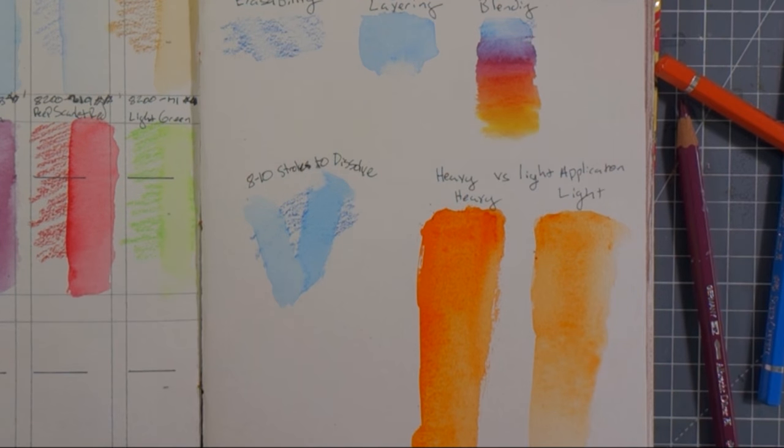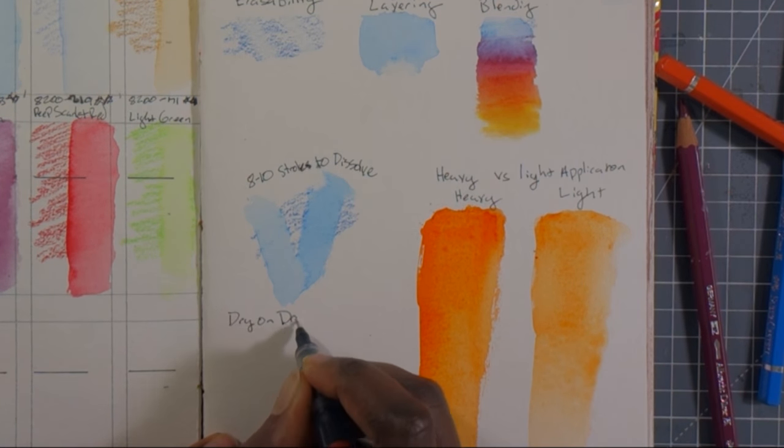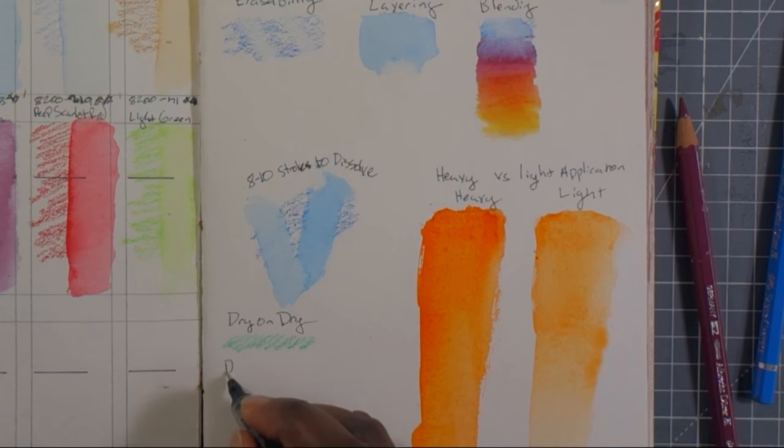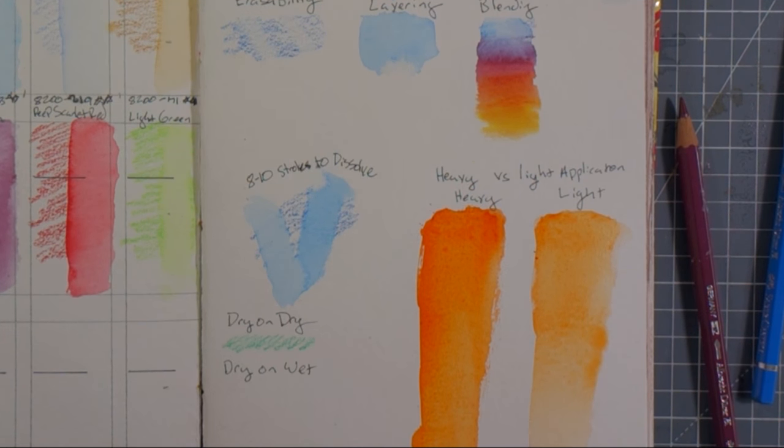Now I wanted to try a couple of different techniques. First is dry on dry, so dry pencil on dry paper, just like a regular pencil. Then dry on wet, dry pencil on wet paper. The pencil kind of bleeds a little bit into the wetness of the water.